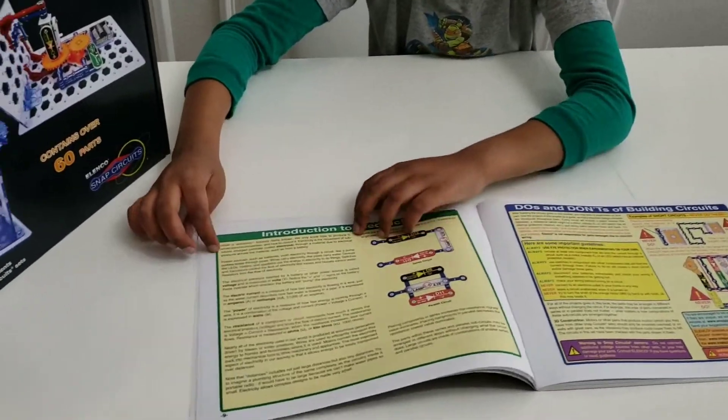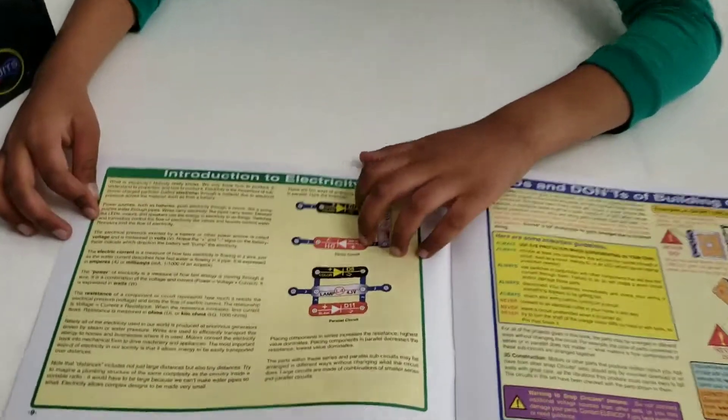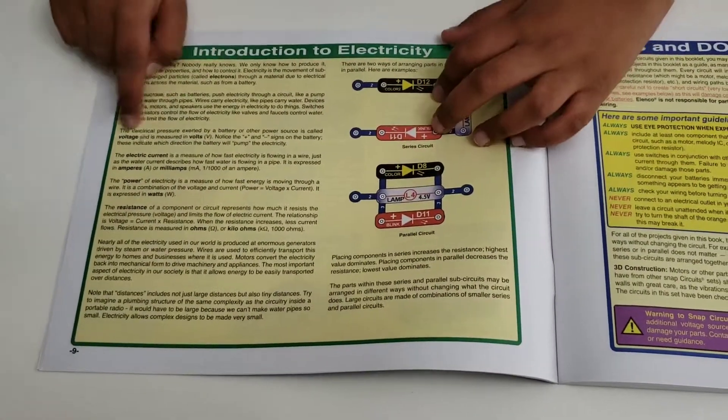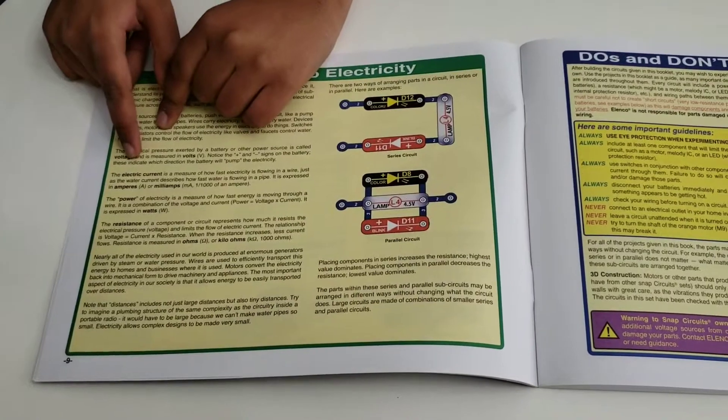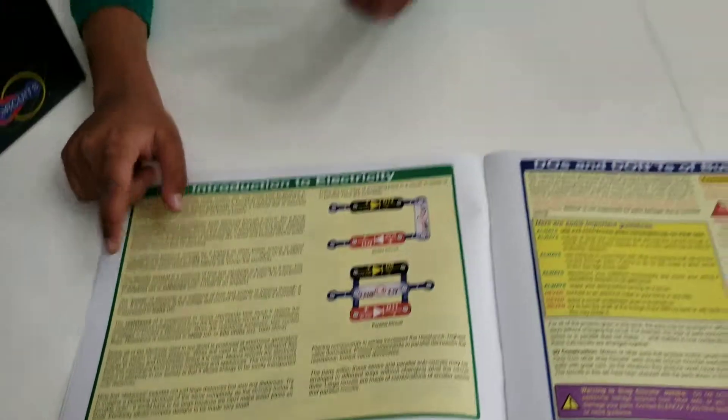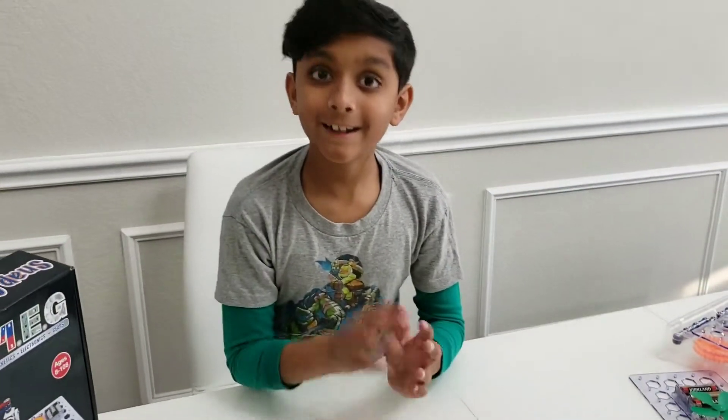Then, it tells all about the introduction to electricity, and here it talks about electrons, voltage, electric current, power, and resistance, and all those neat stuff.